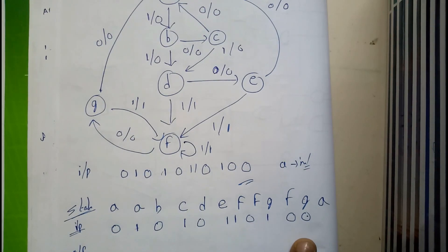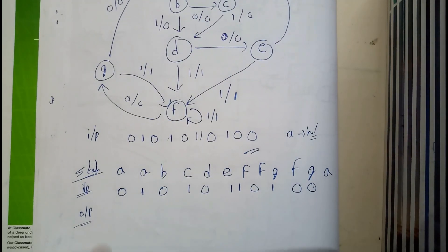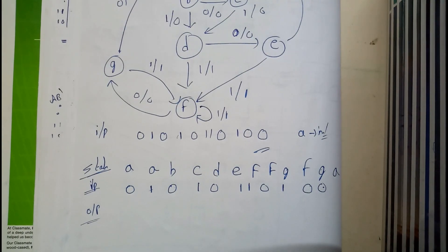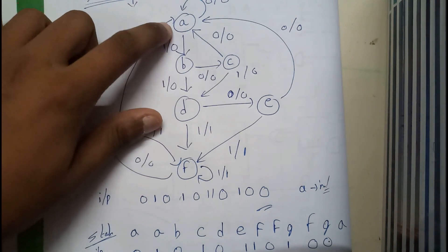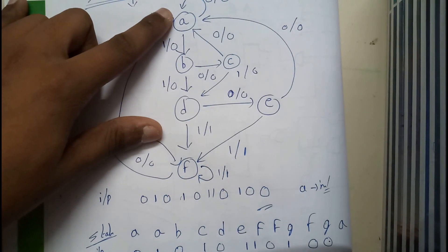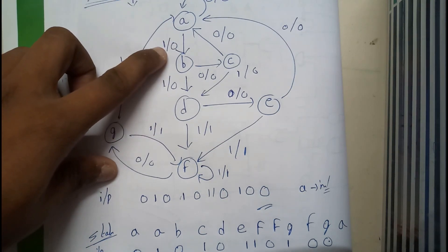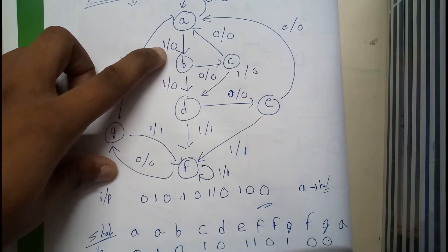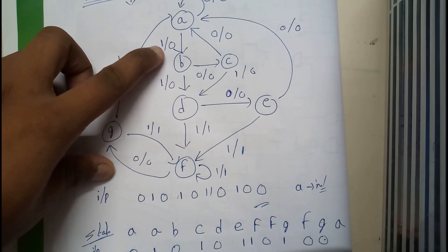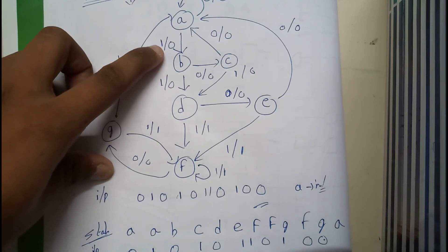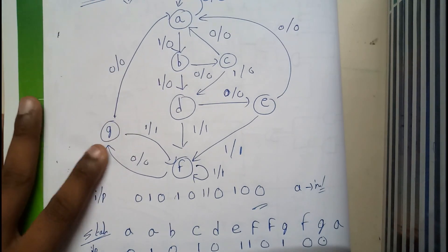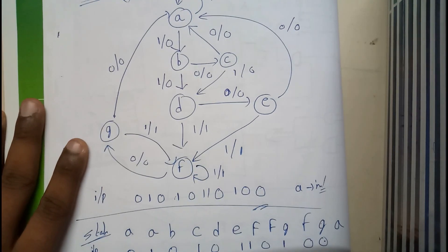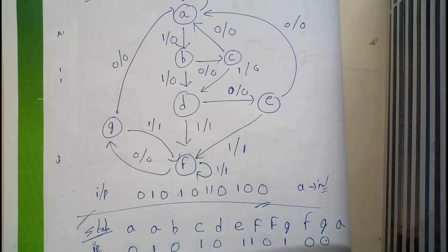Now we need to write the output. So: A-zero output is zero, A-one output is zero, B-zero output is zero, C-one output is zero, D-zero output is zero, E-one output is one, F-one output is one, F-zero output is zero, G-one output is zero, G-zero output is zero.